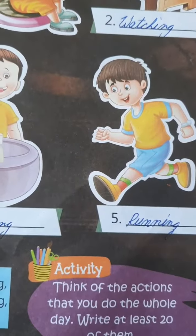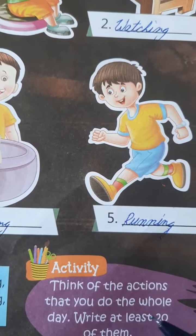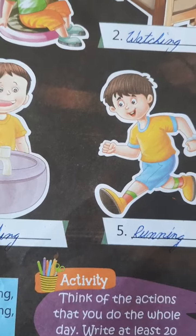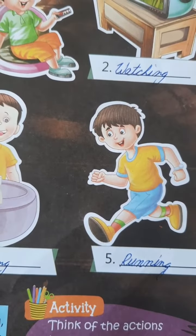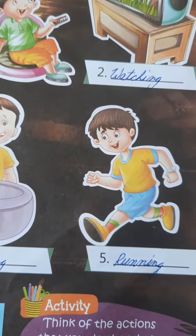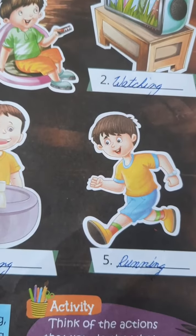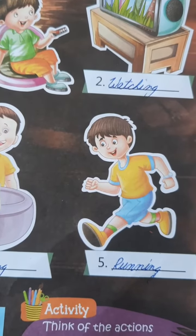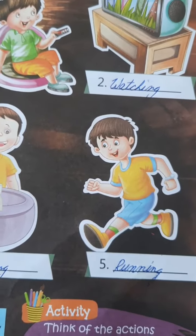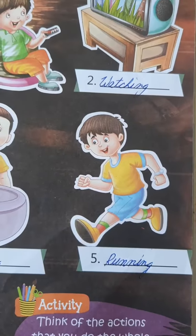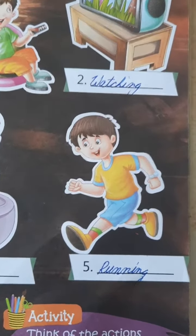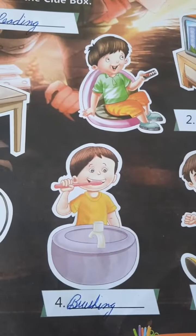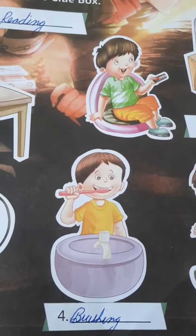Children, this is your activity. Think of the actions that you do the whole day. Write at least 20. Running, dancing, jumping, skipping, bathing, reading, singing, eating, drinking, washing, combing, talking, studying, watching, playing. These all are actions. This you have to learn, and this chapter you will write in your books.